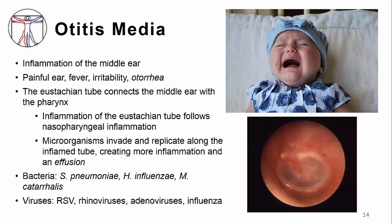Another simple infection that can become quite complicated is otitis media. This often presents as a painful ear, fever, irritability, and sometimes cloudy or clear drainage from the ear itself. Remember that the eustachian tube connects the middle ear to the pharynx. Any inflammation of the eustachian tube can occur following any inflammation of the nasopharynx. As that long tube gets inflamed and swells, microorganisms can invade and replicate along the inflamed tube, creating more inflammation, a cycle of inflammation, and an effusion or fluid collection in that middle ear — prime territory for a colonizing bacterium to persist, replicate, and become a pathogen. Some of the bacteria involved are Streptococcus pneumoniae, H. influenzae, Moraxella catarrhalis, and others.